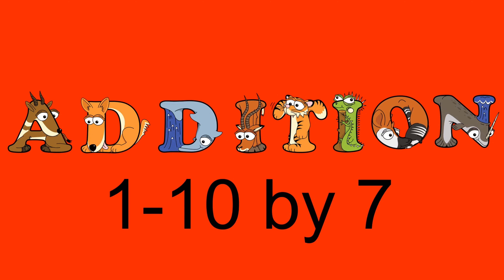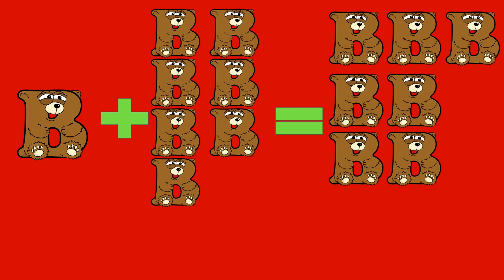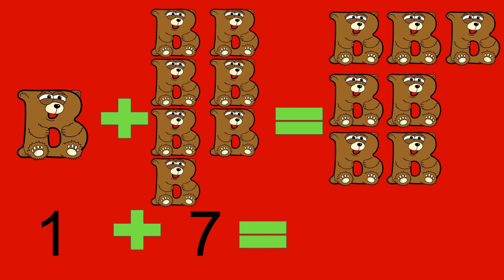Addition 1 to 10 by 7 with Alphabetimals. 1 bear plus 7 bears equals 8 bears. 1 plus 7 equals 8.